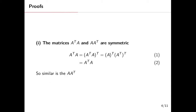Let me walk through a simple proof of why these matrices are symmetric. We consider A-transpose-A; you can try A-A-transpose yourself. A matrix is symmetric if its transpose gives back the same matrix. Taking the transpose of A-transpose-A and expanding, we get A-transpose times A-transpose-transpose, which simplifies back to A-transpose-A. The same argument works for A-A-transpose.